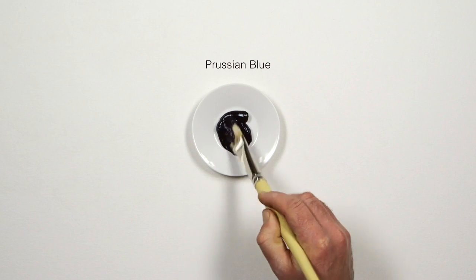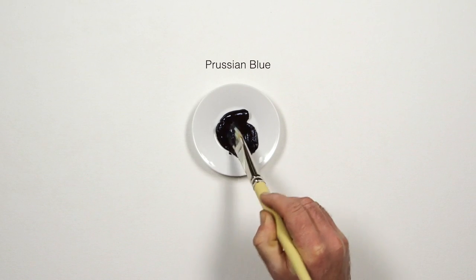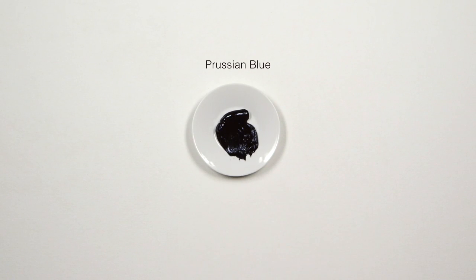Prussian blue is one of my favorite dark tones to use and a very powerful color. It's perfect for creating your own blacks by adding burnt umber.